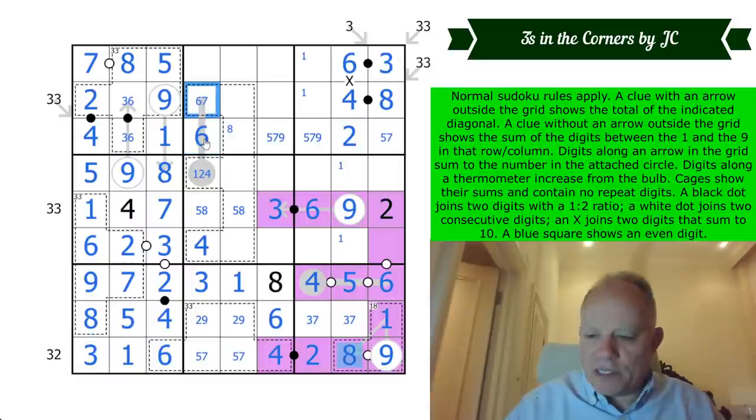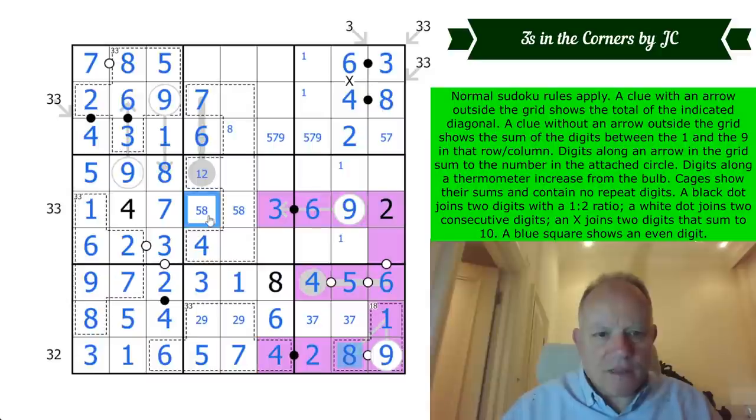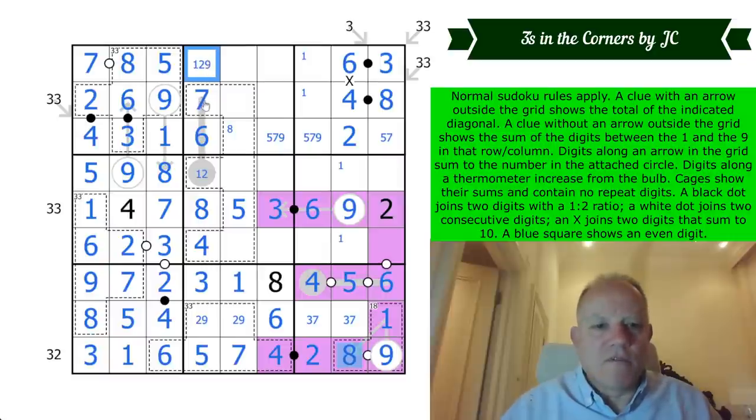Doesn't resolve this cell, does it? Ah, this five, seven is done. That does the eight, five pair. And then we've got one, two and nine left in column four to do. Now we need a six in box five.